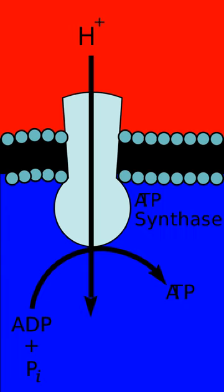Complex I accepts electrons from the Krebs cycle electron carrier nicotinamide adenine dinucleotide and passes them to coenzyme Q, which also receives electrons from Complex II. Q passes electrons to Complex III, which passes them to cytochrome C, which uses the electrons and hydrogen ions to reduce molecular oxygen to water. Four membrane-bound complexes have been identified in mitochondria, each an extremely complex transmembrane structure embedded in the inner membrane. Three of them are proton pumps, and the structures are electrically connected by lipid-soluble and water-soluble electron carriers.